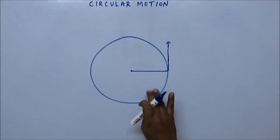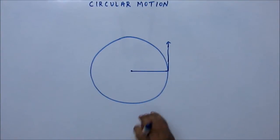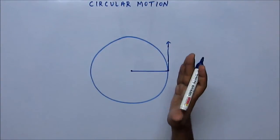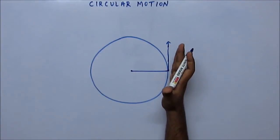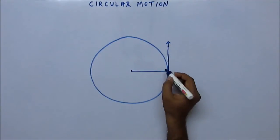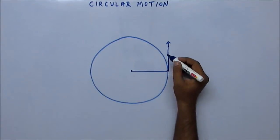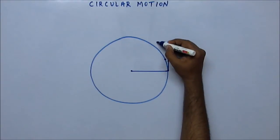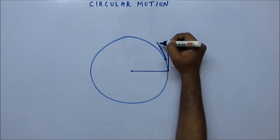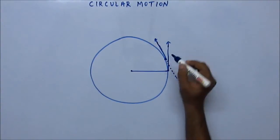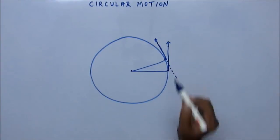Whatever we find here will be the centripetal acceleration. Suppose the particle started from here, so the velocity vector at this point is vertically up — perpendicular. After some time the particle came to another position, and the velocity vector again will be tangential, like this.